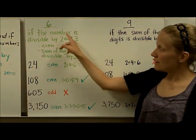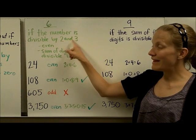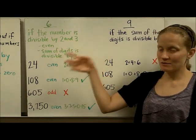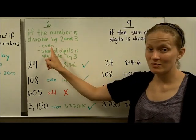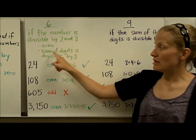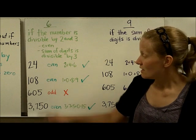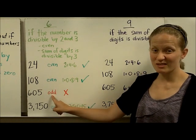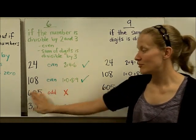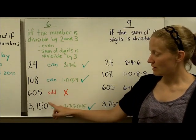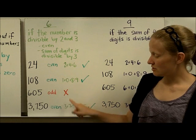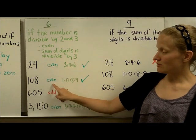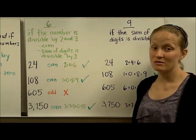For 6, we have to check two things: the number must be divisible by both 2 and by 3. If it meets both requirements, then it's divisible by 6. To be divisible by 2, it must be even; to be divisible by 3, the sum of the digits must be divisible by 3. Going through our numbers — even, even, odd — immediately, since 605 is odd, it's not divisible by 6 without checking further. For the remaining numbers, the digit sums are all divisible by 3, so those numbers are divisible by 6. Three of the four numbers are divisible by 6.